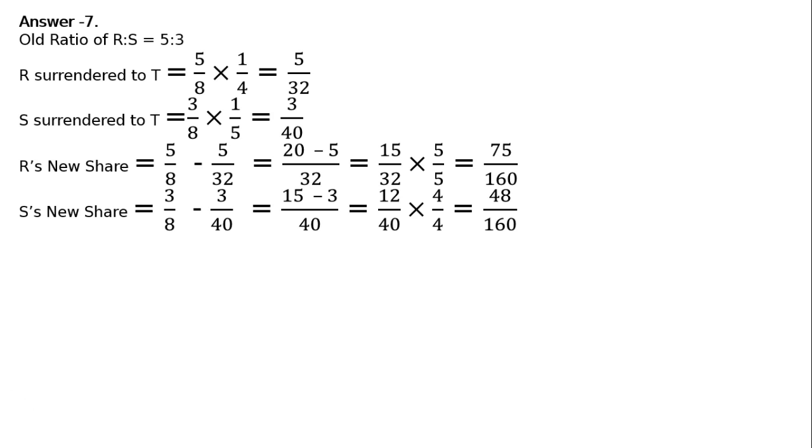Now, what is T's share? T got from R 5 upon 32 plus S 3 upon 40. They surrendered, T got. R and S surrendered and T got. LCM will be 160 divided by 32. That is 25 plus 14 is equal to 37 upon 160.